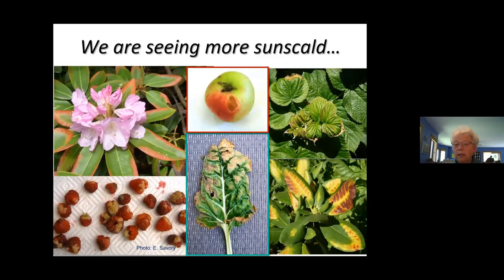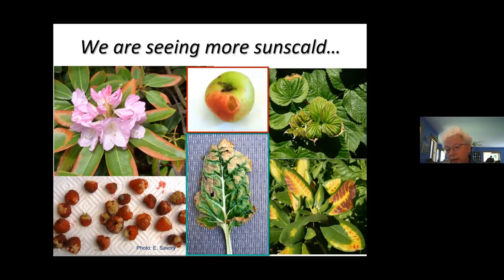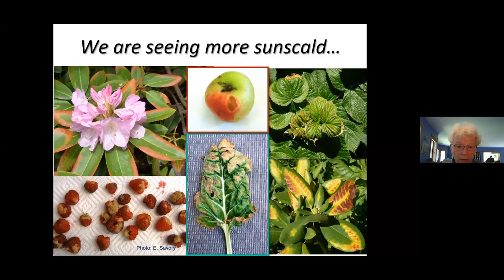We are seeing more sun scald, and the reason I show these is because they look like diseases. Notice that the damage is between the leaf veins — the worst damage is farthest from the main veins where the sap carries liquid. It's the tips of leaves and leaf margins — that's classic sun scald. You can also see the shadow of a leaf above protecting the leaf below. Also, when the damage happens to many different unrelated varieties of plants in your garden, that's not disease either — that is an injury.